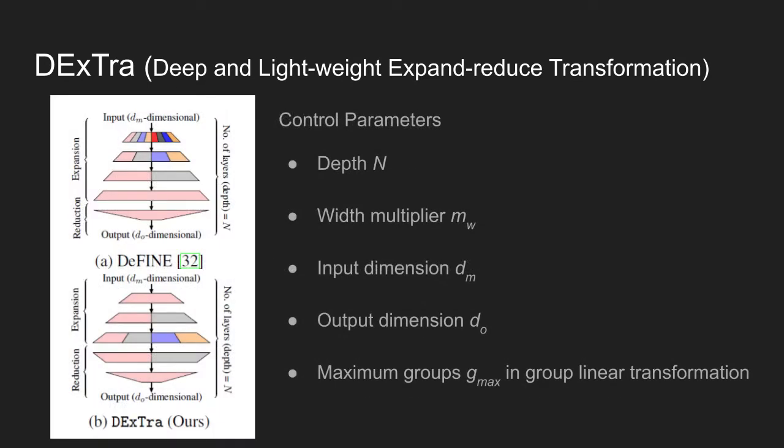The DExTra module expands a D-M dimensional input vector into a higher dimensional space and reduces it down to a D-O dimensional output vector using N layers of group transformations. This is shown in figure B. The input features are fed on top and are mapped to a higher dimensional space. At the expansion stage, we can observe that the features are grouped into different blocks.